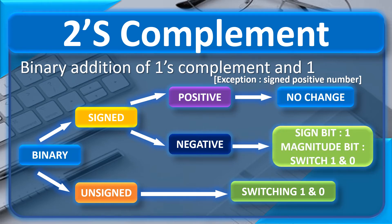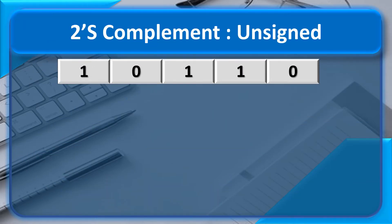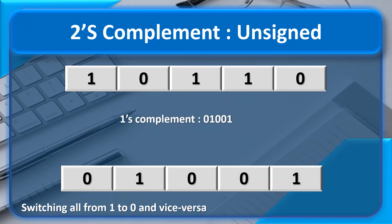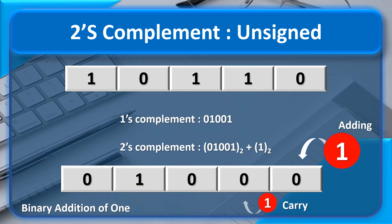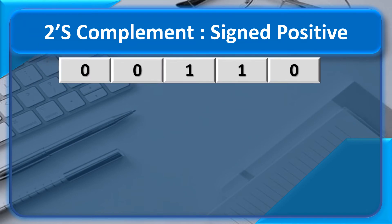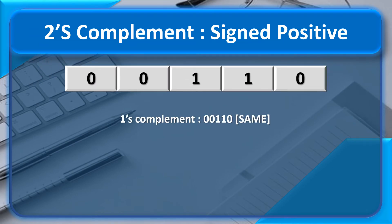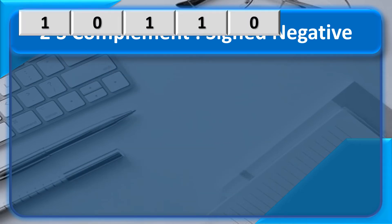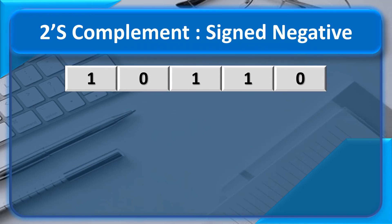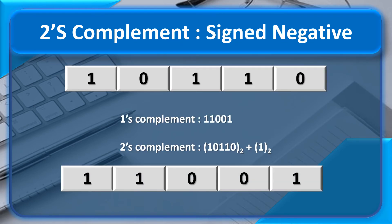Now let us see the examples for unsigned binary representation. For signed positive number, the 2's complement is same as the original number. Hence, in this case, the number, its 1's complement and 2's complement are all the same. For signed negative number, its 1's complement is obtained and 1 is added to get the 2's complement.